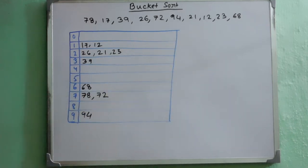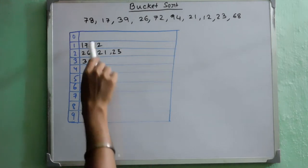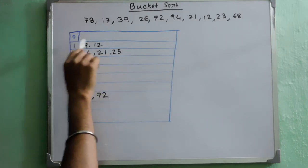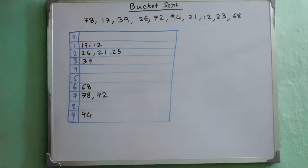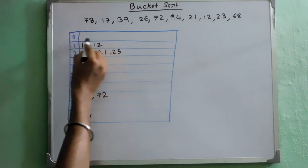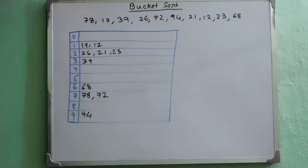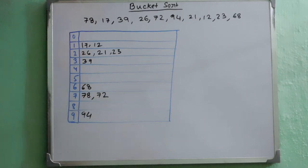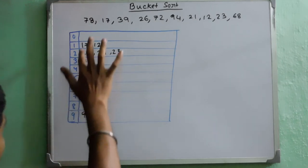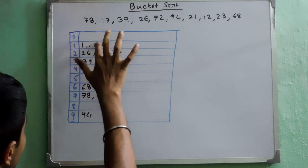Now what we will do? We will consider each bucket separately. We can apply any sorting technique. In other words, you can apply any sorting technique you like, be it selection sort, insertion sort, heap sort, merge sort, anything you like. Then you will sort the elements in each bucket separately. For example, in this bucket we have 17 and 12. We will sort them using any technique we like.